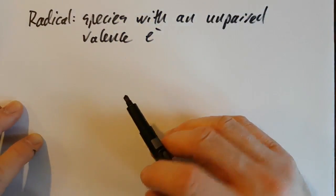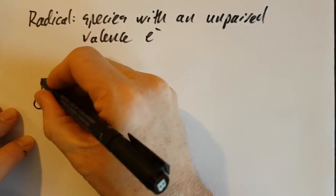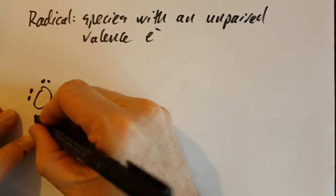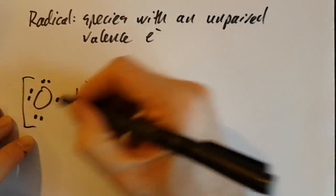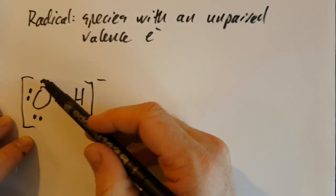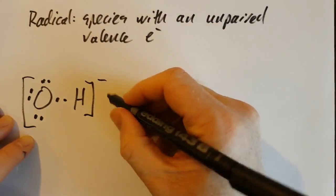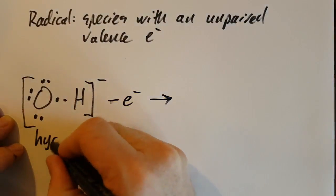Looking at the hydroxide ion, ionizing radiation can come in and knock off one of these valence electrons here. An electron can be removed from this hydroxide ion, leaving behind...